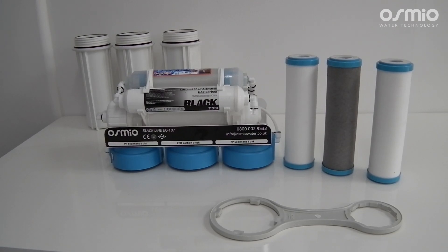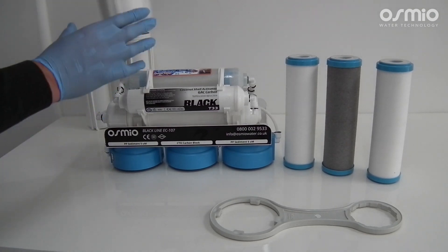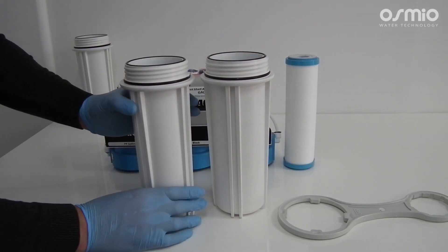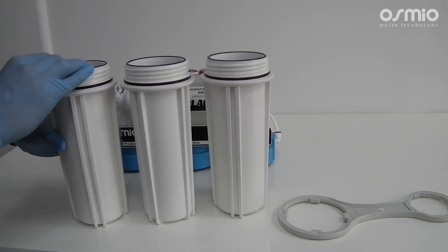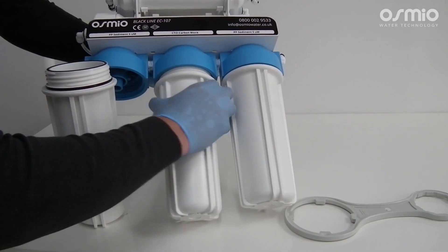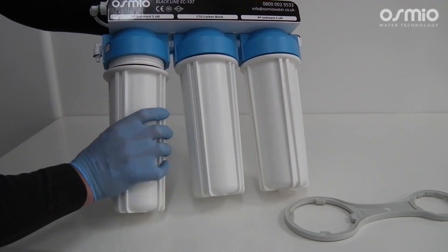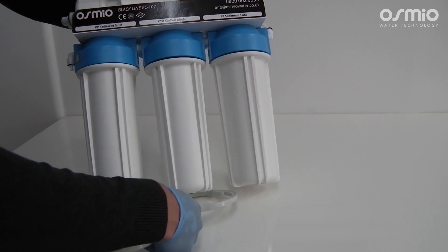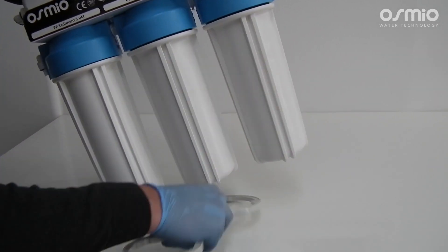On the current filter unit we have three pre-filters. Starting from the right hand side we have a 5 micron sediment filter, in the middle will be the carbon block, and on the left hand side will be another sediment filter. Place the cartridges inside the housing bowls and then one by one screw the bowls with the cartridges into the housing heads. Use the wider side of the spanner to do the final tightening to make sure that there will be no leaks.